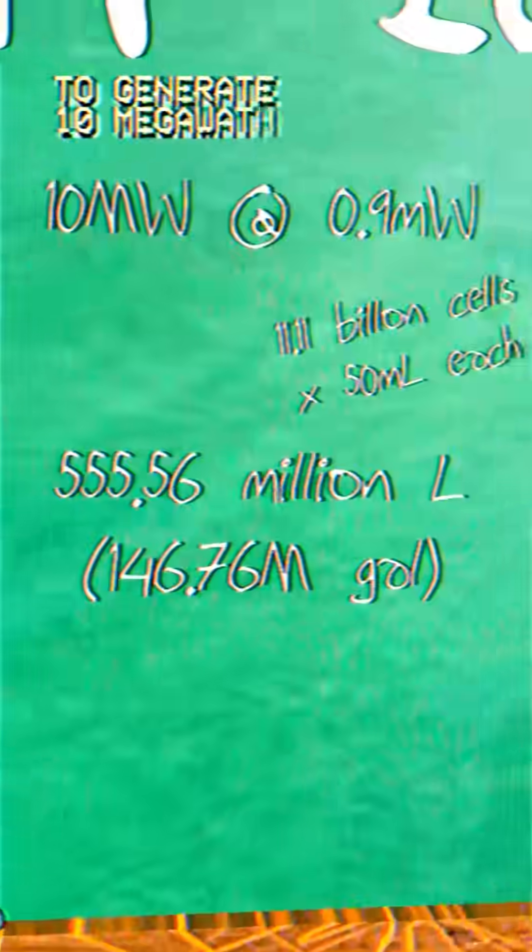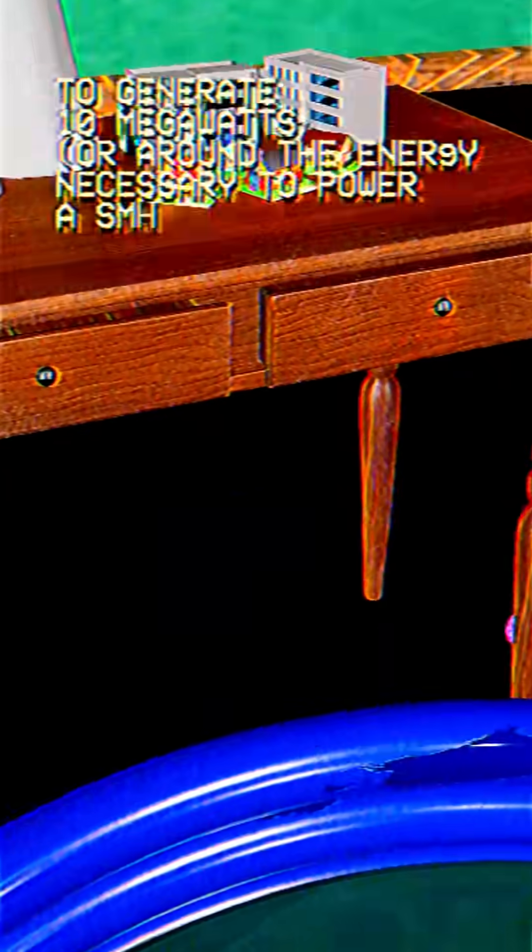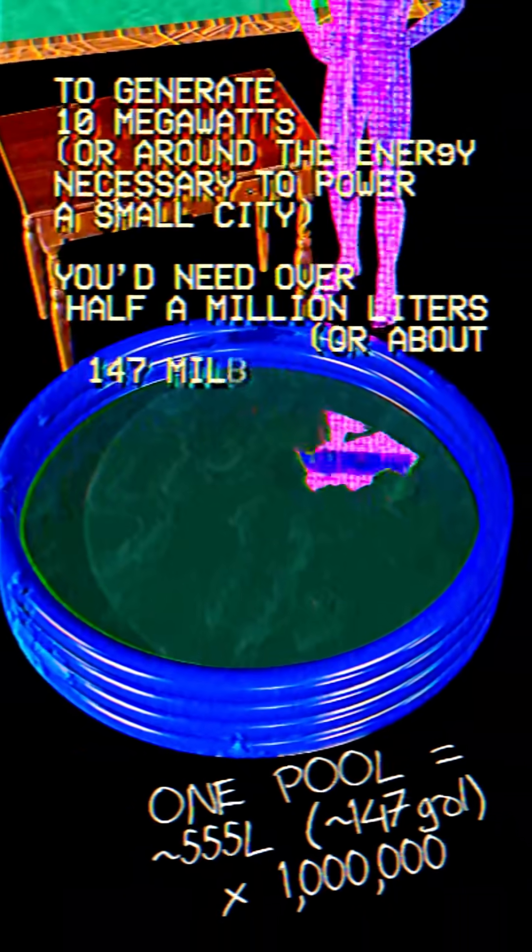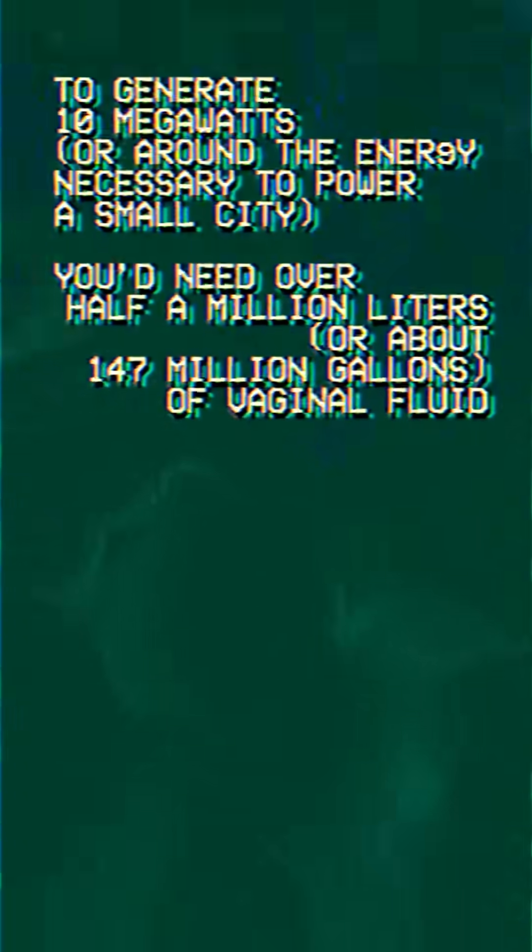To generate 10 megawatts, or around the energy necessary to power a small city, you'd need over a half a million liters, or about 147 million gallons, of vaginal fluid.